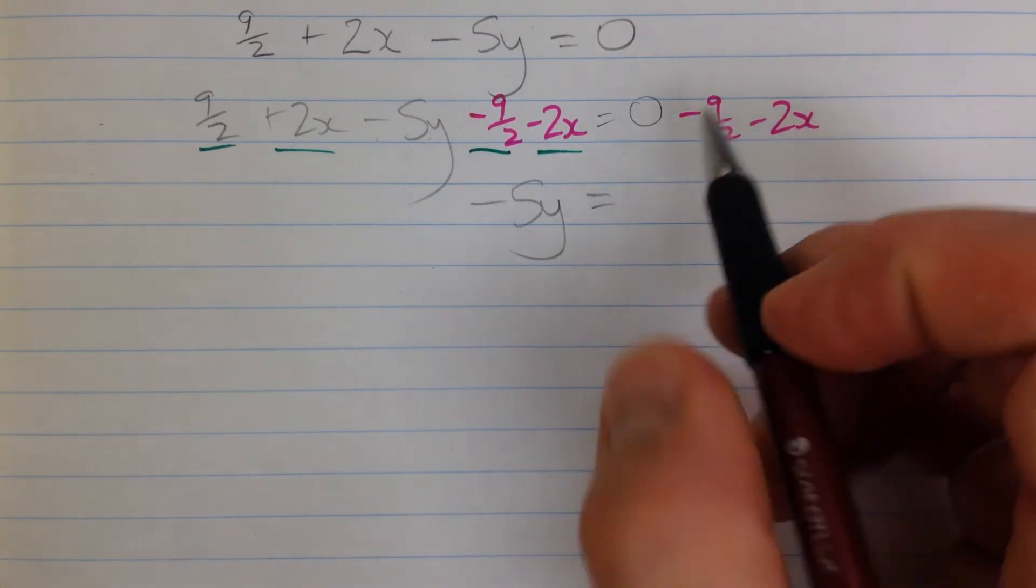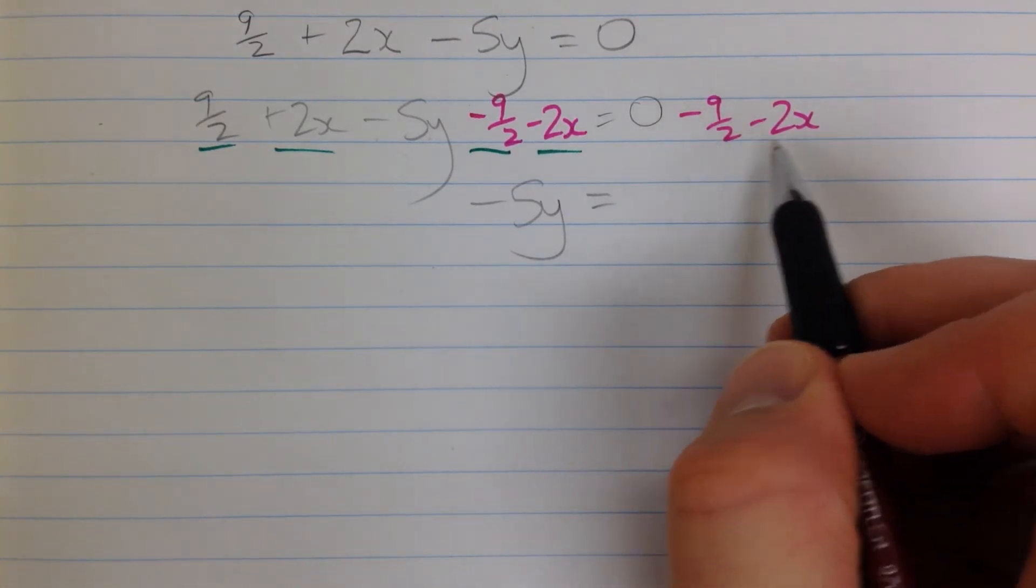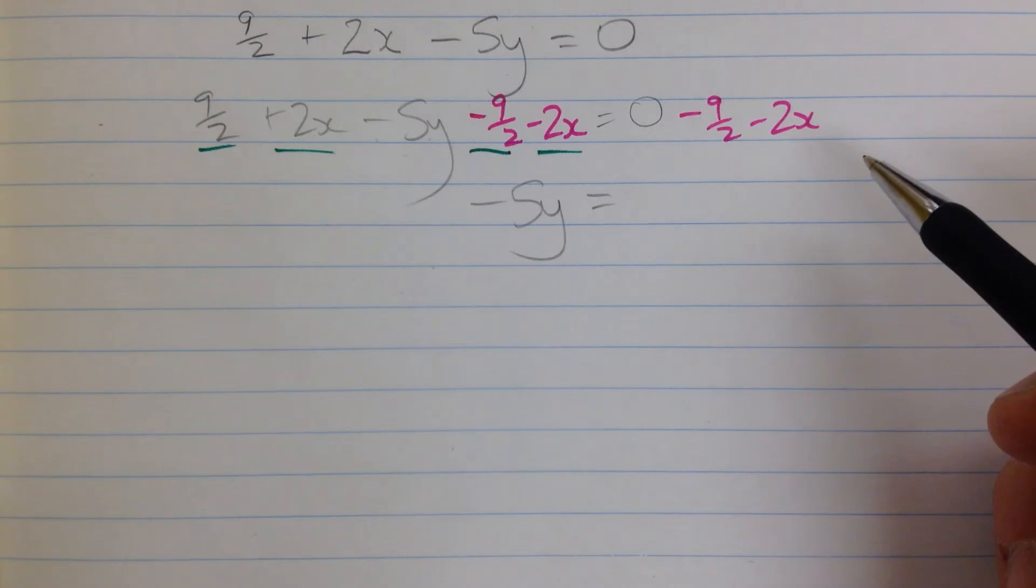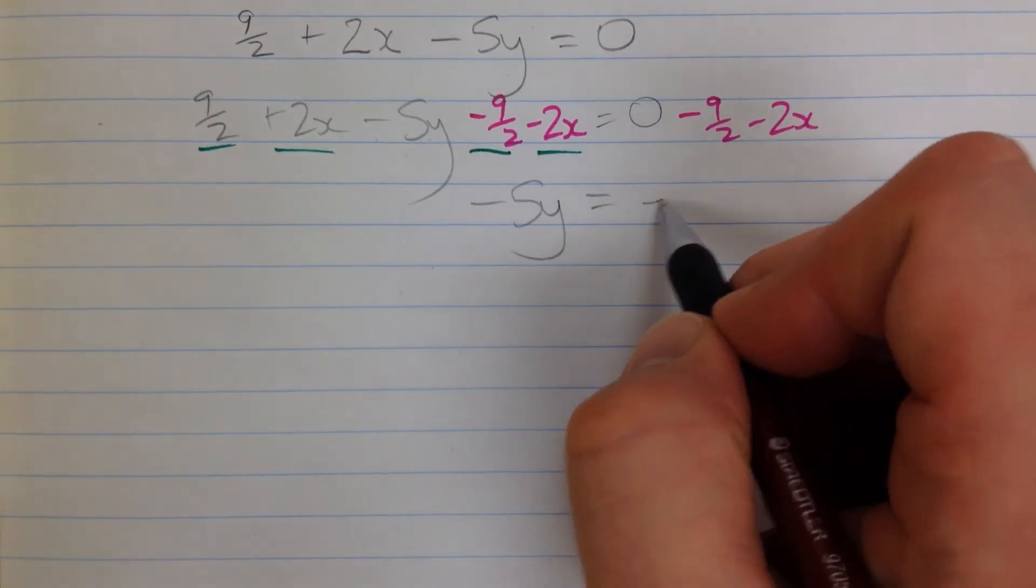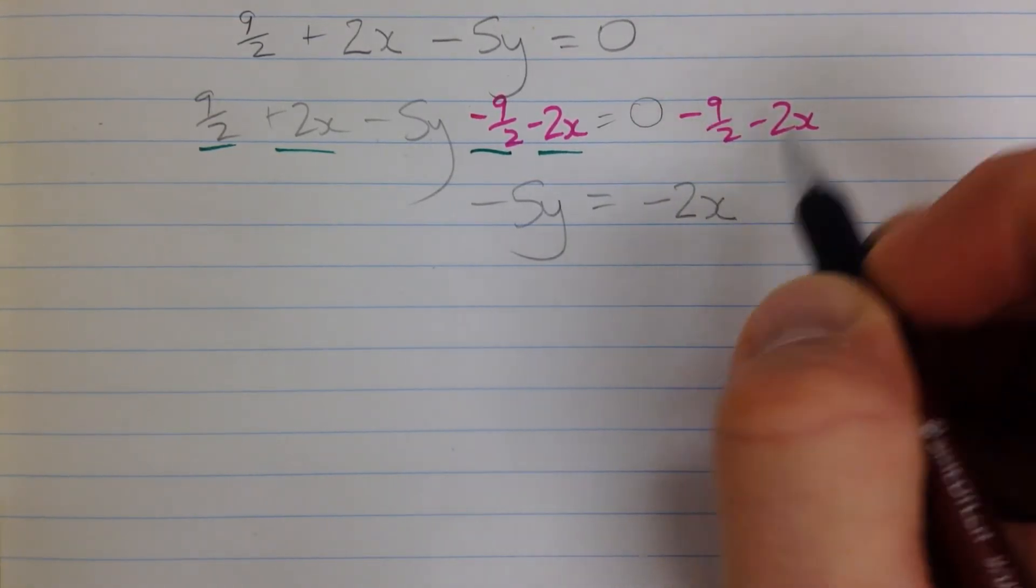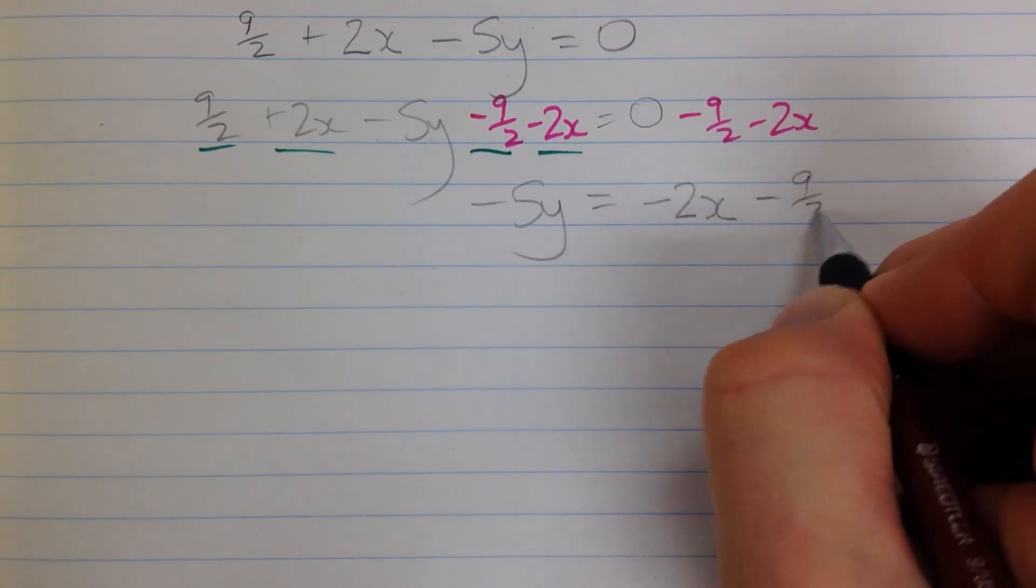Okay, well how should I write this? I can write negative 9 halves, minus 2x. Of course I know that I usually write my x's first, so I'm going to do that, negative 2x minus 9 halves.